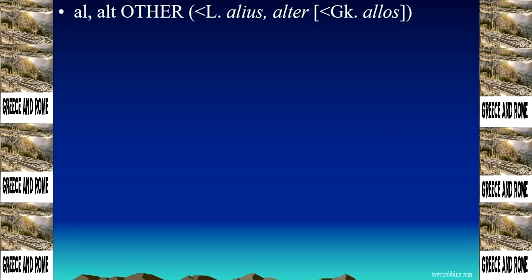Here we go again with a Latin root that has Greek roots — a Greek root that it's derived from. Allos in ancient Greek means 'other,' one of the ways of saying other. And then 'allous' and 'alter' are related to it. 'All' and 'alt' tend to be the forms that are used most often.